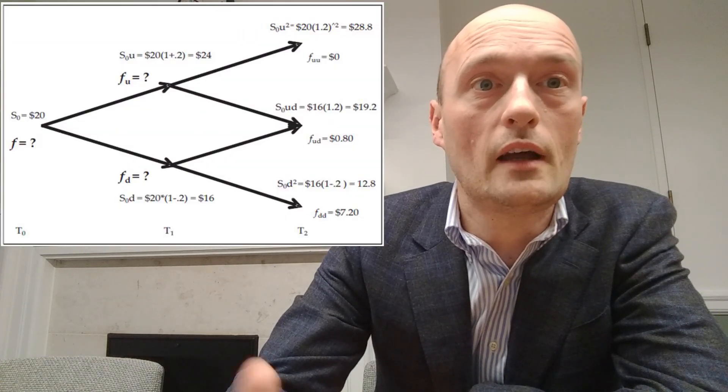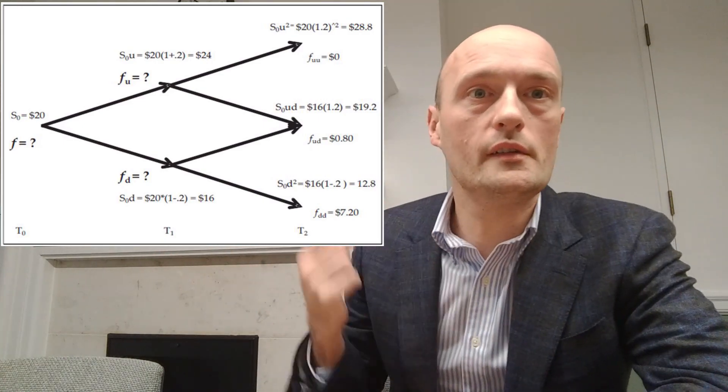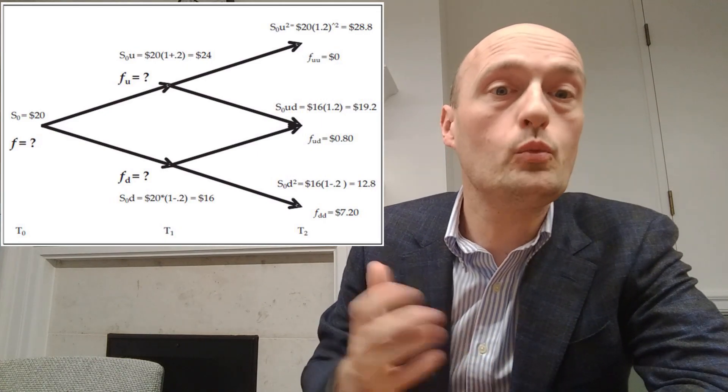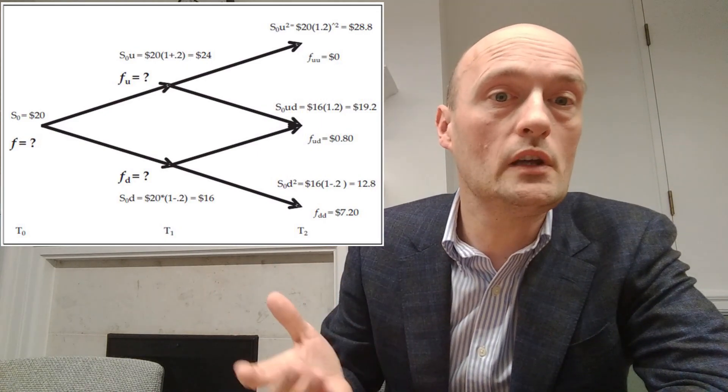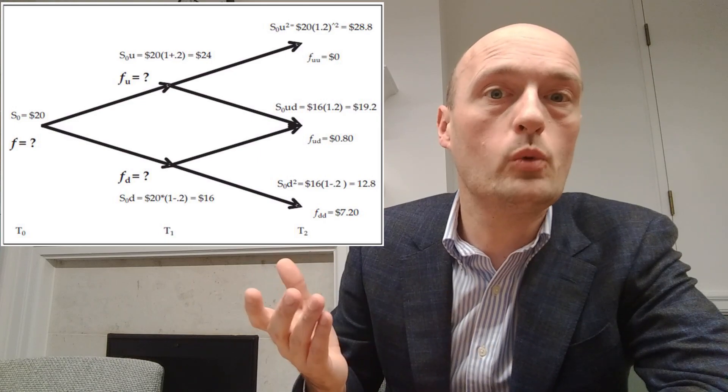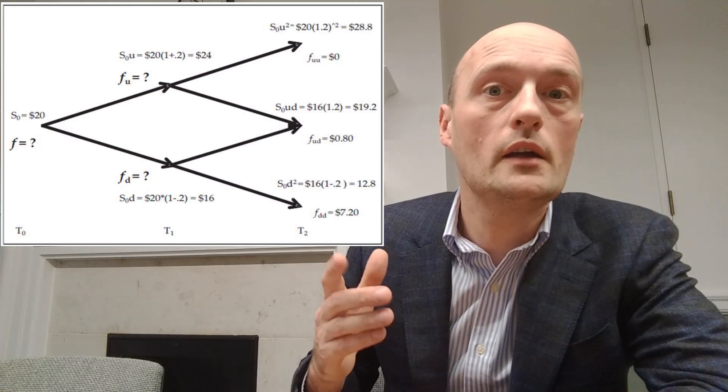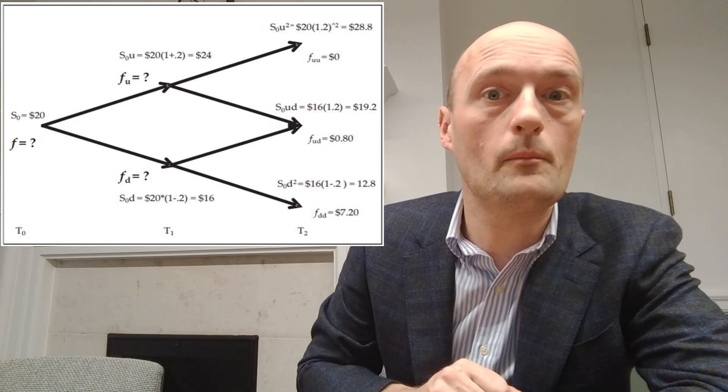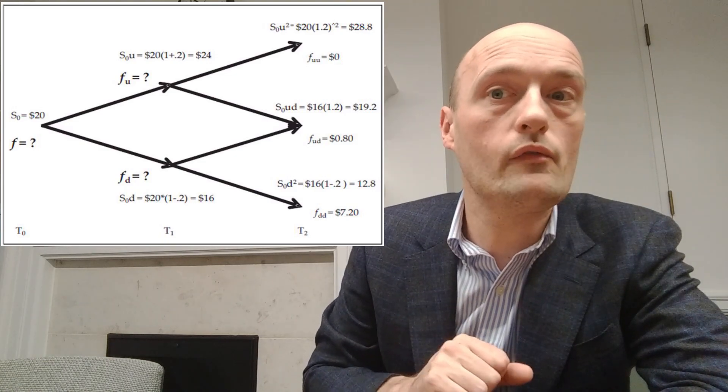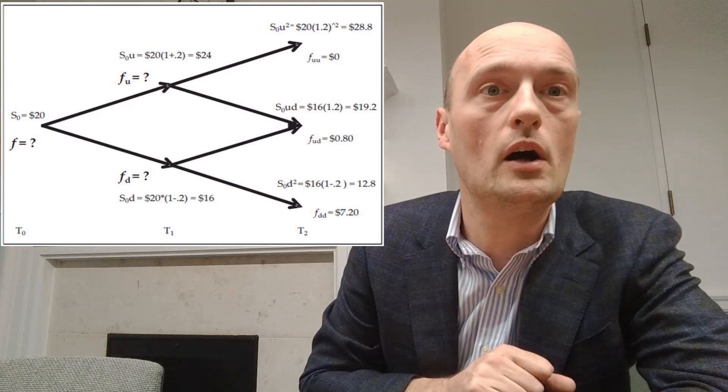So off we go. So the first step is simply to build the tree. Much like in the last video we're just going to put in the information we have. So step one, draw the tree. You can see the tree up there on the screen and we write in all of the information we know. So we know that the underlying is at $20 right now, so we write that in. And we then know that it can go up by 20 percent or down by 20 percent at each step. So 20 times 1.2 gives us 24, so we write that in at the next step on the tree. And then 24 times 1.2 is 28.8, so we write that in at the very top at the up up node on the tree.